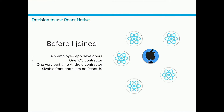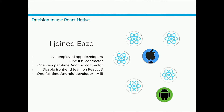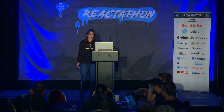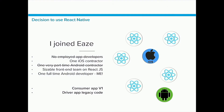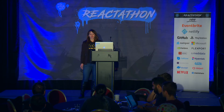Before I joined, Ease had no full-time employed app developers — one full-time iOS contractor and one very part-time Android contractor who basically just cut Android builds. But we had a very sizable team on React.js for the frontend. So when I joined, they released version one of our consumer app, a quick iteration built using React Native and borrowing a lot of frontend resources. We also had a lot of driver app legacy code written by contractors that we really wanted to rewrite.